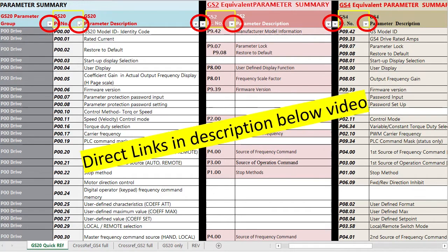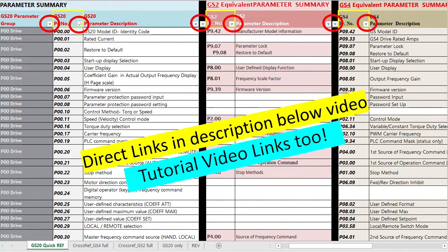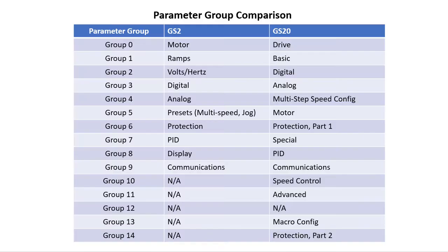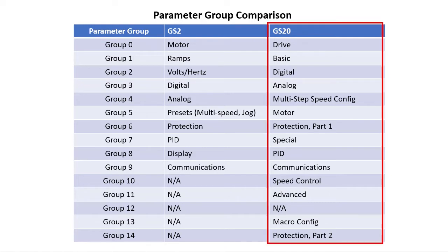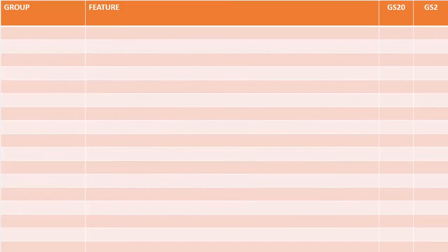Both of these amazing resources will be your best friend as you make the transition. Direct links to both are in the description below this video. And of course we have lots of videos covering these features — there is a link to those in the description too. With over 600 parameters, there is a huge amount of information to cover, so we will break this up into a series of videos. We are going to walk through these parameter groups roughly in this order. Here we go.